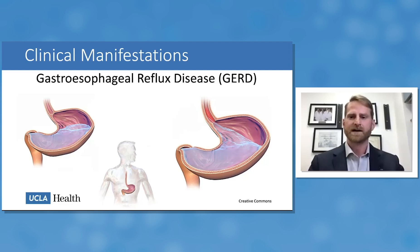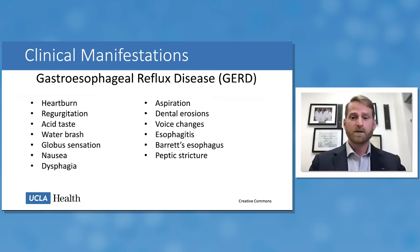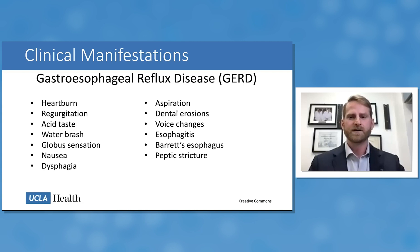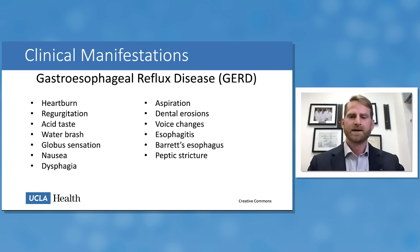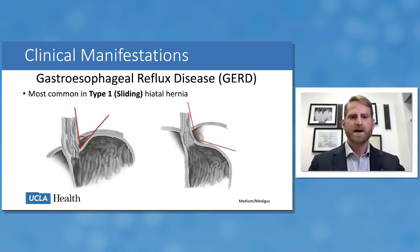GERD can present with an incredible number of symptoms. Classically there is heartburn — retrosternal chest pain that is postprandial — as well as regurgitation, subjective acid taste in the mouth, water brash, globus sensation, nausea, and dysphagia. Extra-esophageal manifestations include chronic aspiration and pneumonias, dental erosions, and voice changes. Objective findings on endoscopy include esophagitis, peptic strictures, and Barrett's esophagus.